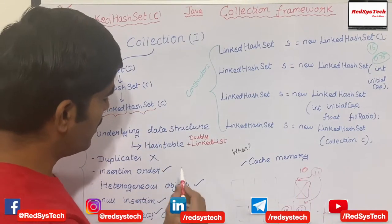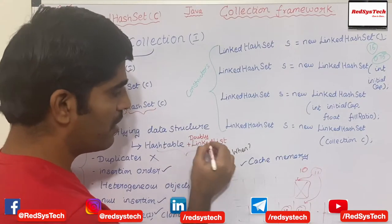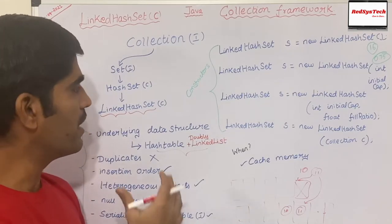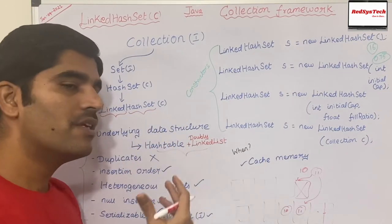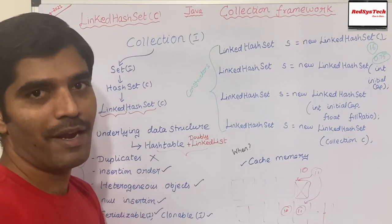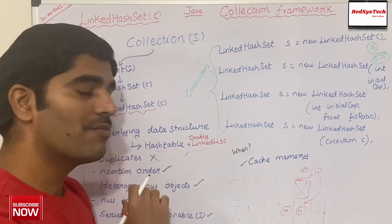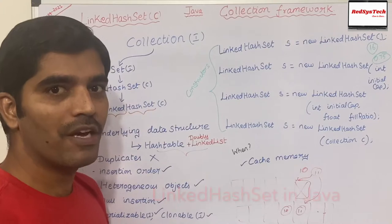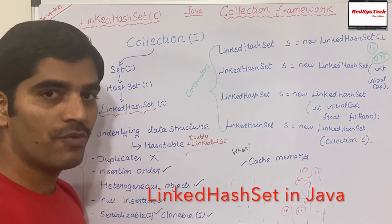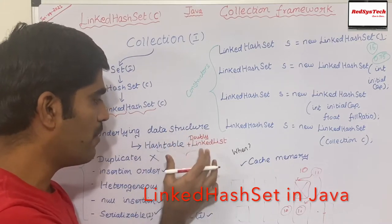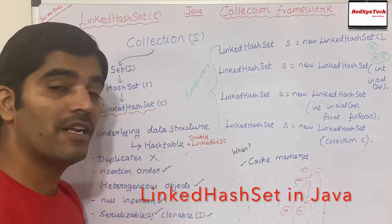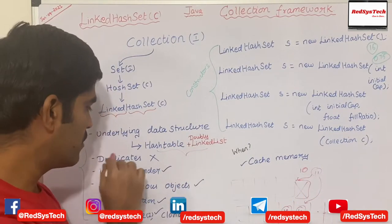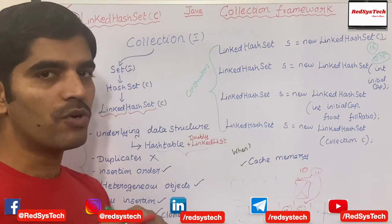There is one more catch. The underlying data structure is a hash table and doubly linked list. The underlying data structure is the base for any collection framework implemented class — this is how data is stored, retrieved, and manipulated at the backend. We should understand how it actually works. I have a separate video explaining the hash table and another separate video explaining how linked list works, so you guys can watch those.